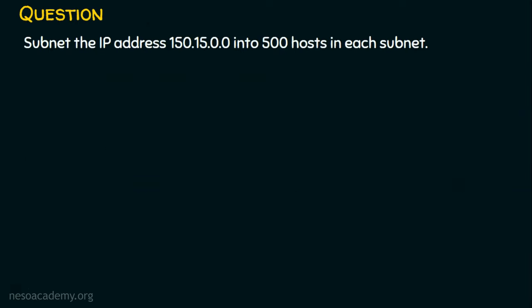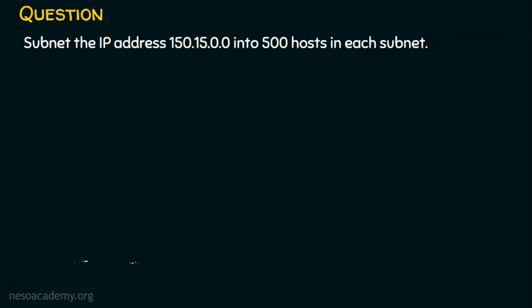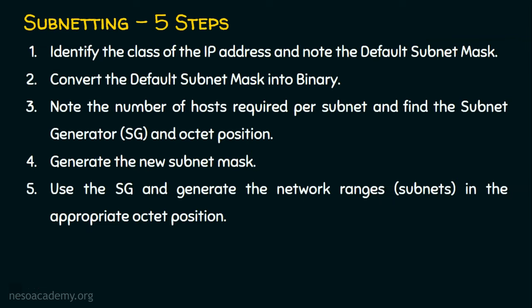Let's dive into the question now. The question is: subnet the IP address 150.15.0.0 into 500 hosts in each subnet. In the previous problems we took a class C IP address, but now we are going to focus on class B. If the first octet of an IP address is between 128 and 191, then it is class B. So this is a perfect example of a class B IP address, and we are going to do subnetting for class B.